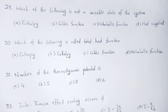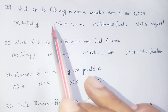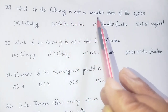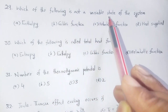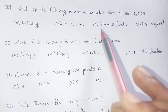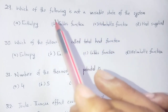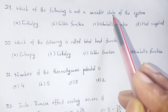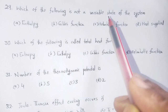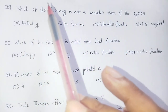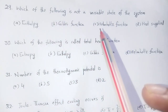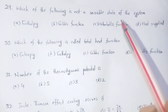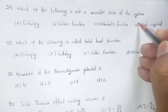Question number 29: Which of the following is not a state variable of the system? A state function depends on the initial and final point. The options are: Enthalpy, Gibbs function, Helmholtz function, and heat supplied. Heat supplied is not a state function. Option number D is correct.